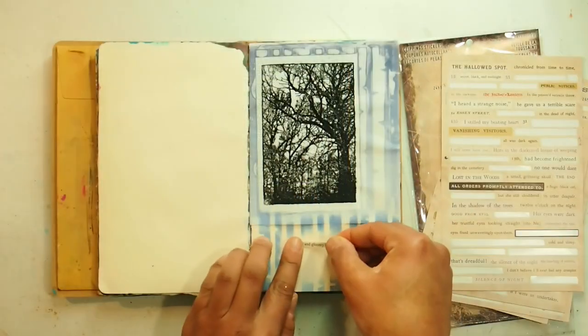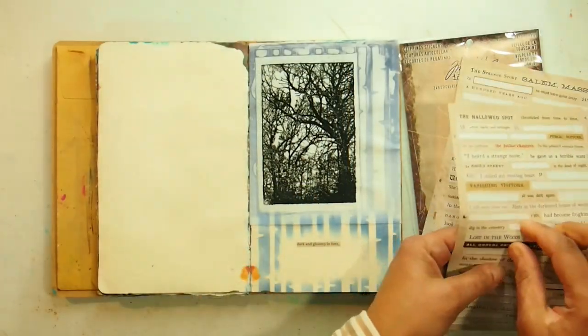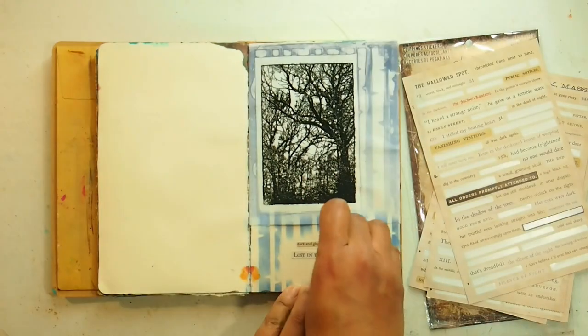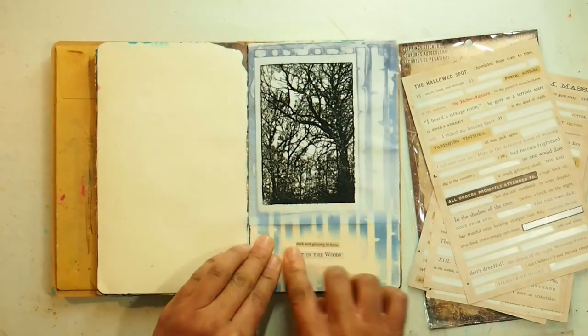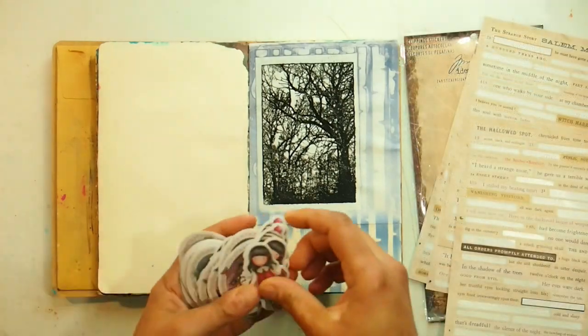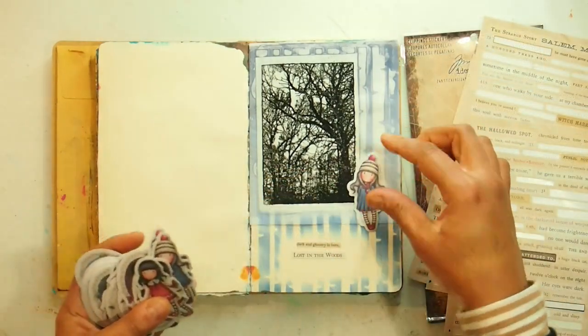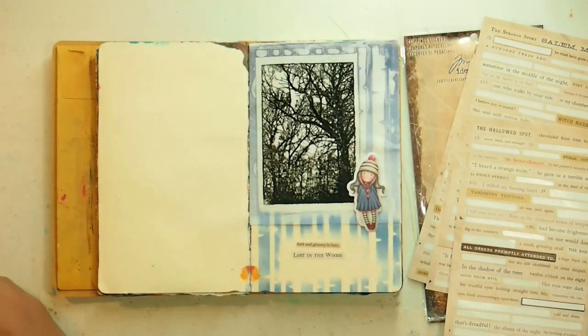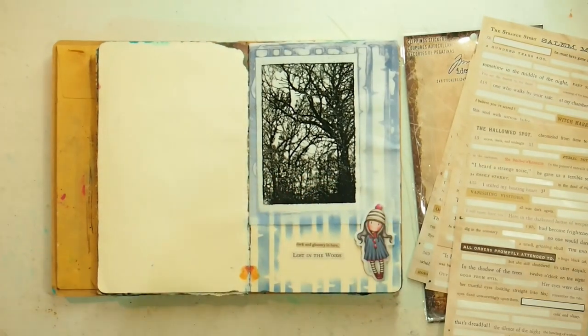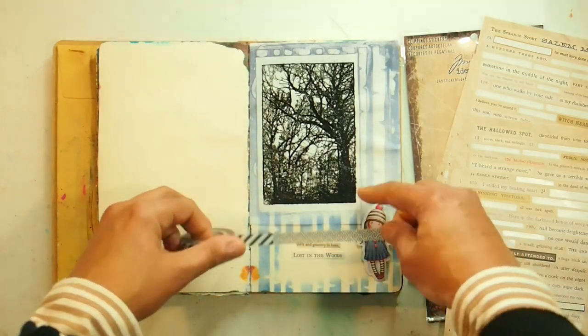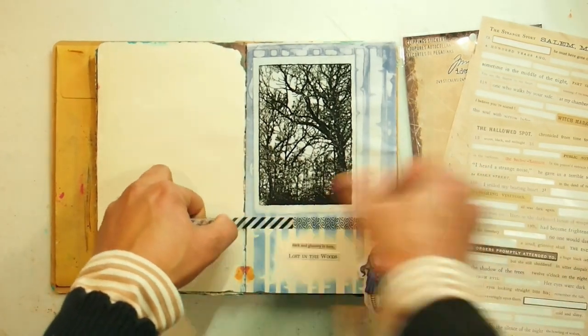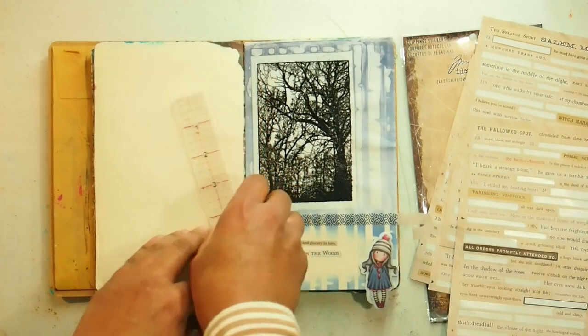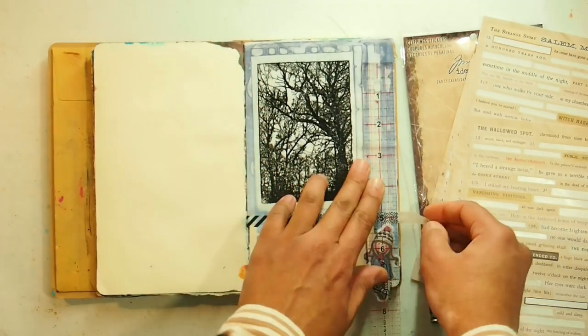Here we go. I'm just adding some sentiments now. These are the Tim Holtz clipping stickers. I love these guys. I also reach for my gorgeous stickers. Once again I love these guys. Just when you just don't feel like stamping and coloring, these girls are perfect. They're also a really good size. I am adding some washi for that division between the paper that I stuck down.